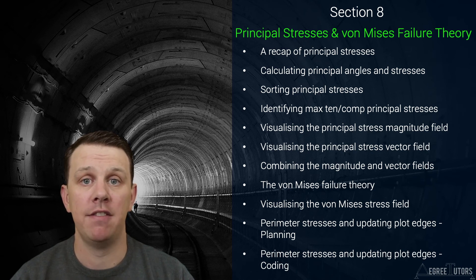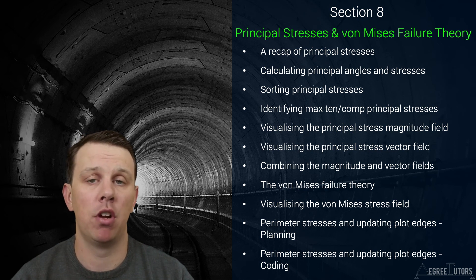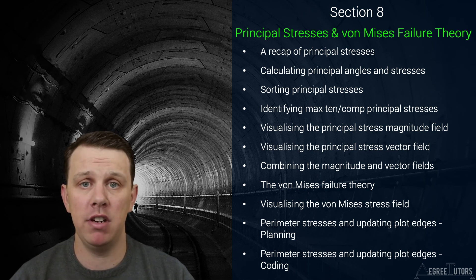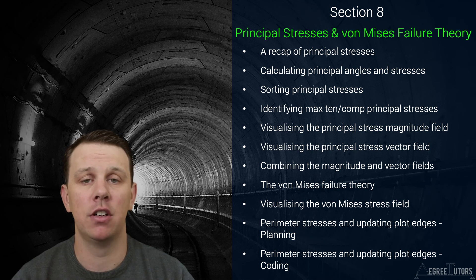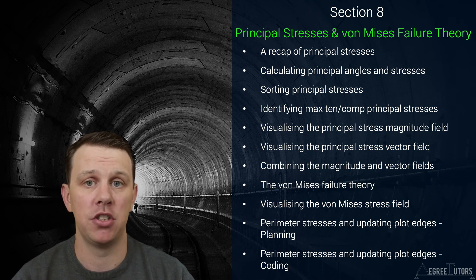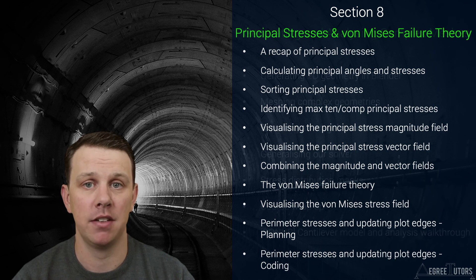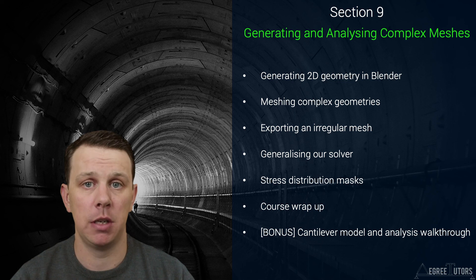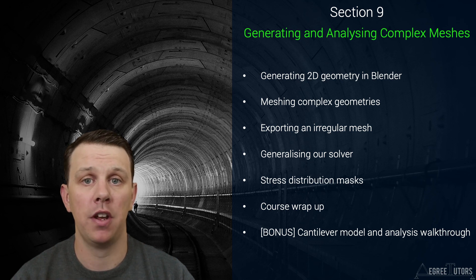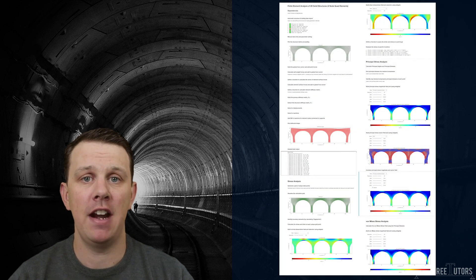After covering principal stress, we'll discuss the von Mises failure criterion, then calculate and visualize the von Mises stress across our structure. Up to this point we've used a simply supported beam as our test case, which has been useful for carrying out validation exercises. But the real power of the finite element method is its ability to handle complex geometries. So we'll analyze a multi-arch viaduct type structure, which will stress-test our code and leave you well-positioned to apply it to more complex structures of your own.